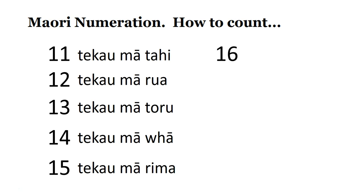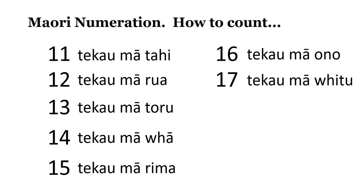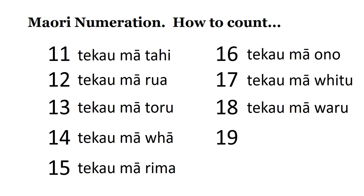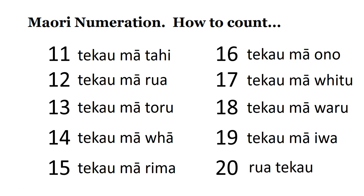Number 16: te kau mā ono. Number 17: te kau mā fitu. Number 18: te kau mā waru. Number 19: te kau mā iwa. And number 20 — remember, that's 2 tens — rua te kau.